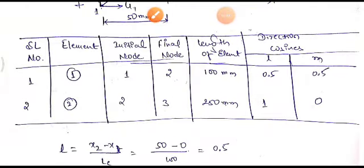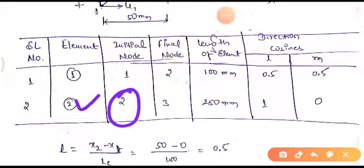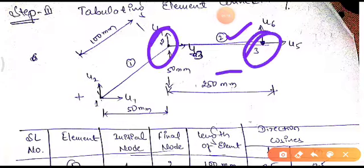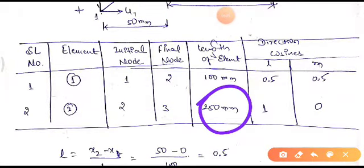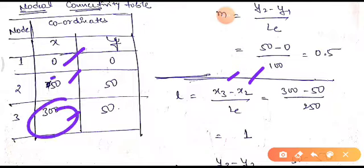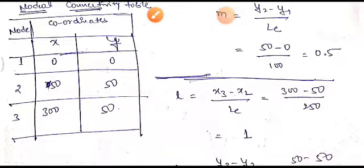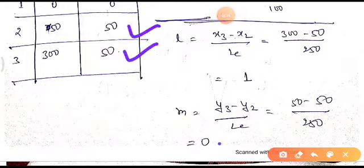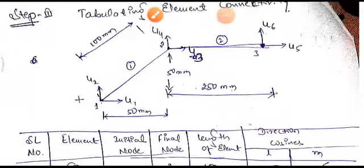The direction cosines for the first element are l = 0.5 and m = 0.5. For the second element, connected between node 2 and node 3 with length 250 mm, we calculate l = (x3 - x2) / length = (300 - 50) / 250 = 1, and m = (y3 - y2) / length = 0. These values are tabulated in the elemental connectivity table.